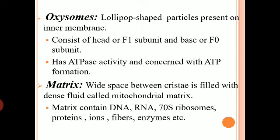What is also present in mitochondria are oxysomes. Inside the inner part of the inner membrane, lollipop-shaped particles are present called oxysomes. An oxysome consists of two parts — a head and a base. The head is also called the F1 particle and the base is called the F0 particle. Oxysomes have ATPase activity, meaning they are concerned with ATP formation. Whenever hydrogen ions (H+) cross through these oxysomes, ATP is produced. So oxysomes are basically related to ATP synthesis.